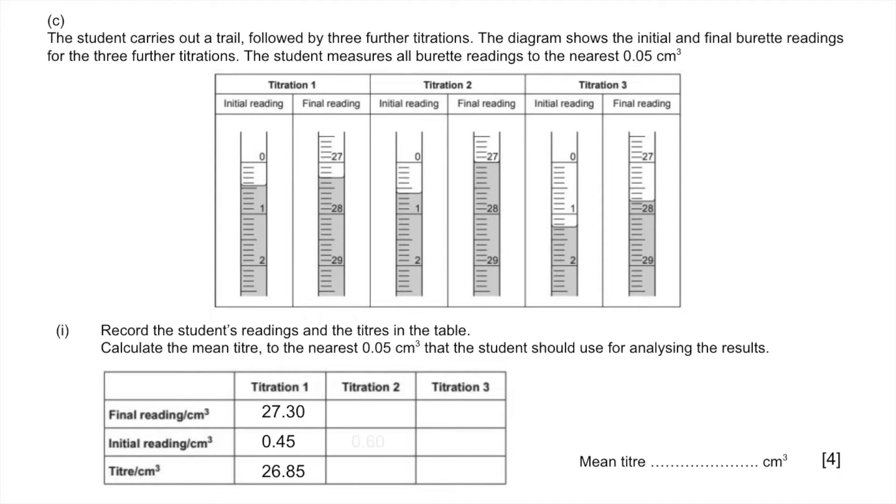Titration two now: we're starting at 0.60. You can see the meniscus is exactly on the line. Don't forget that 0 after the 6, that's really important. Then the final burette reading is again on the line, so it's 27.00. The difference between those is 26.40.